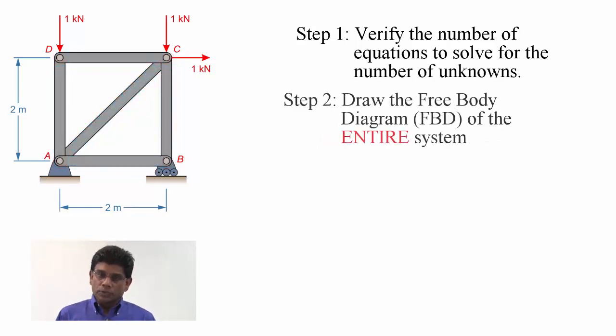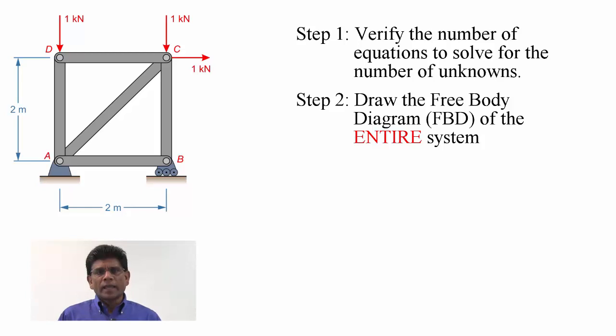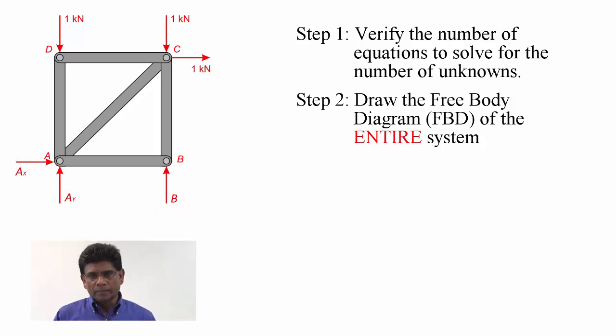Step number two. Let's draw the free body diagram of the entire structure by removing it from the support. Take a look at the free body diagram. We have three unknowns and they are all support reactions. We also have three equations. We can now solve this problem for three support reactions using the three equations of static equilibrium.